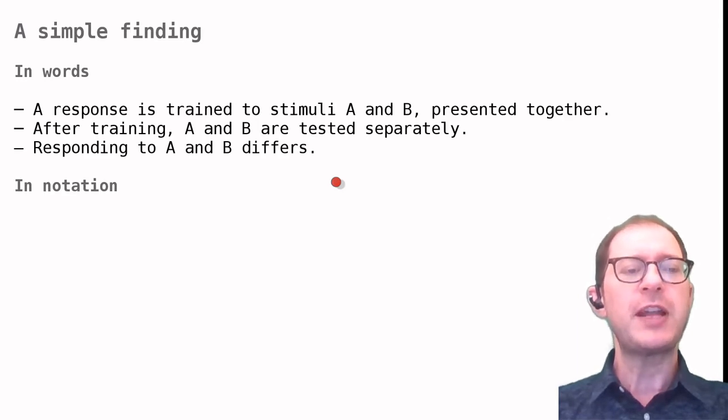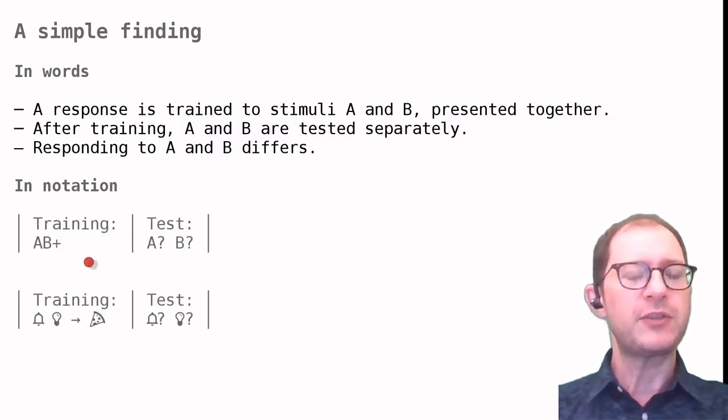In an overshadowing experiment, a response is trained to stimuli A and B presented together. After training, A and B are tested separately, and it is found that responding to A and B differs. In our usual notation, the overshadowing experiment is a training phase with AB+, and then a test with A and B separately.